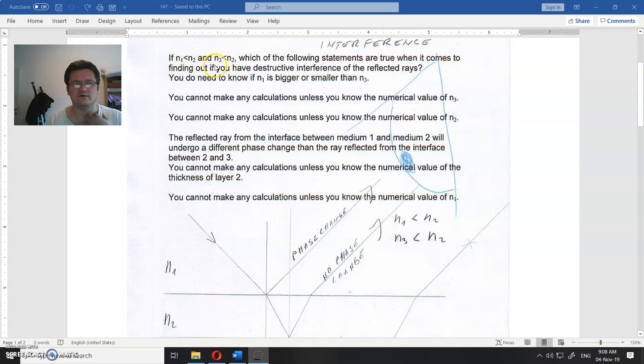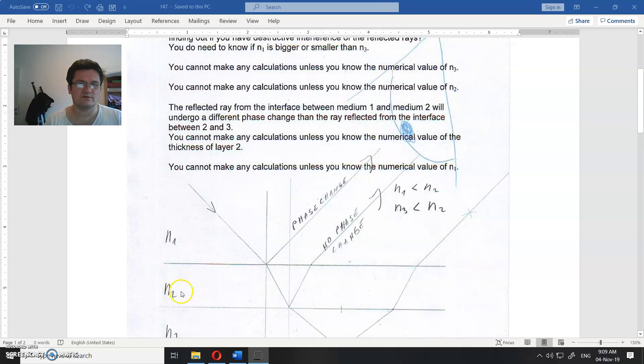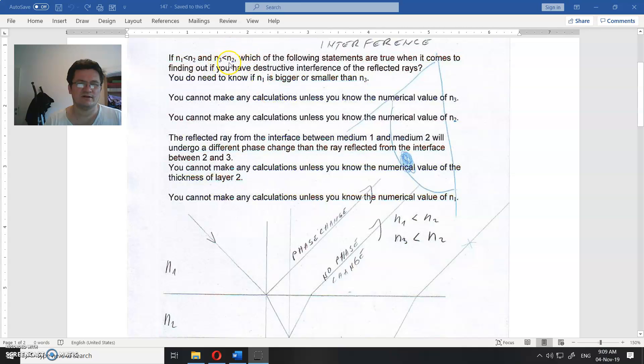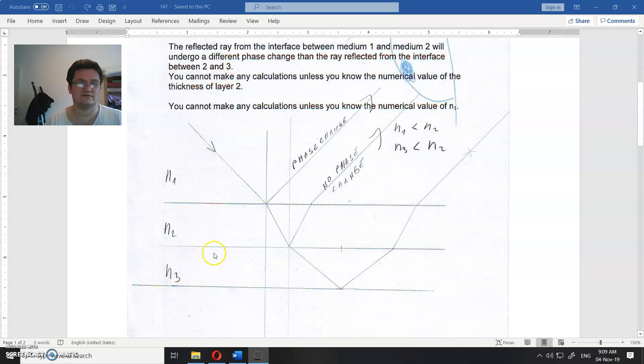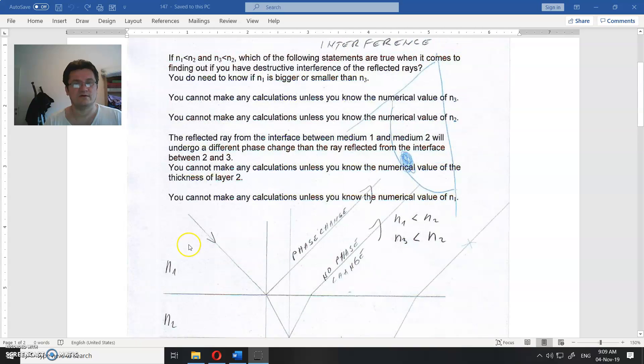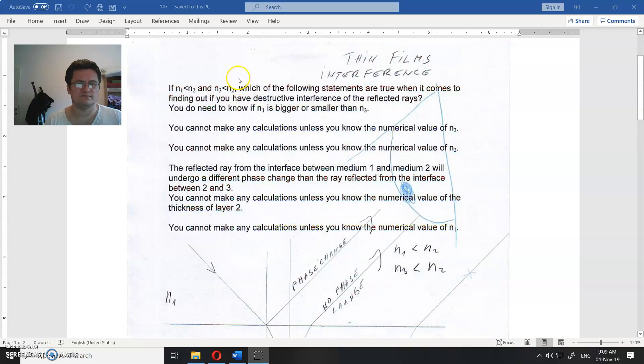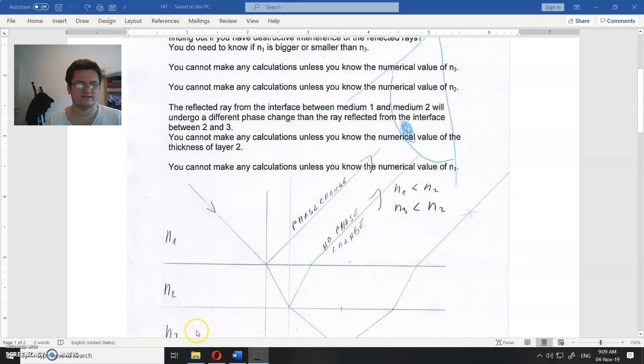If n1 is smaller than n2, this index of refraction is smaller than this one, and n3 is smaller than n2, so this index of refraction is smaller than this one. So both of them are smaller than two. This and this is smaller than this one.